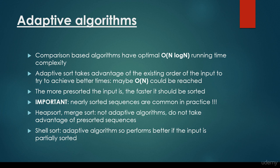It's very important that nearly sorted sequences are quite common in practice. We are going to talk about bubble sort, and there are lots of cases where these sorted sequences are present. Heapsort and mergesort are not adaptive algorithms, so they do not take advantage of pre-sorted sequences. But shellsort, on the other hand, is an adaptive algorithm, so it performs better if the input is partially sorted.